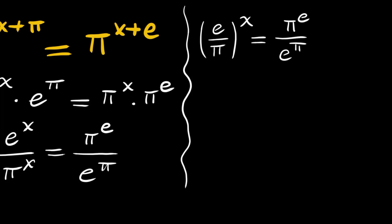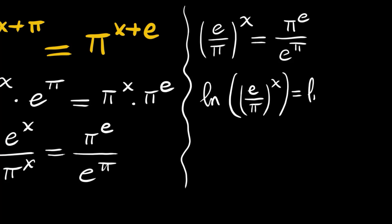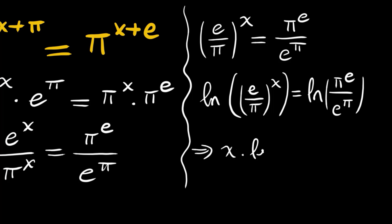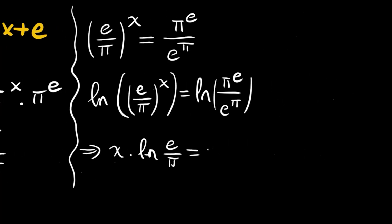Now taking ln of both sides, we will have: ln of (e divided by pi) to the x is equal to ln of (pi to the e divided by e to the pi). The left hand side becomes x times ln(e divided by pi).